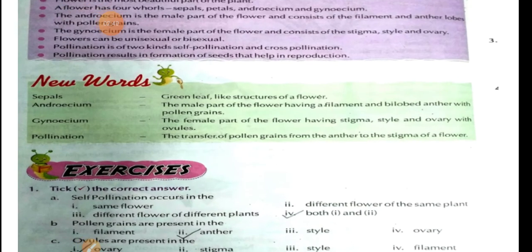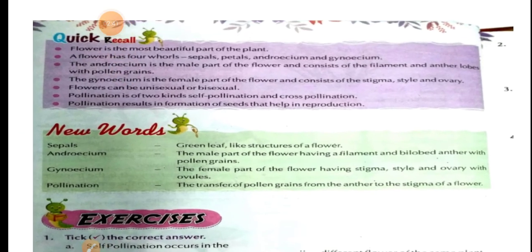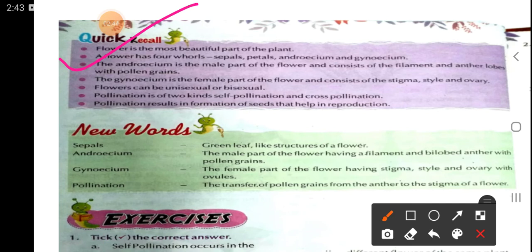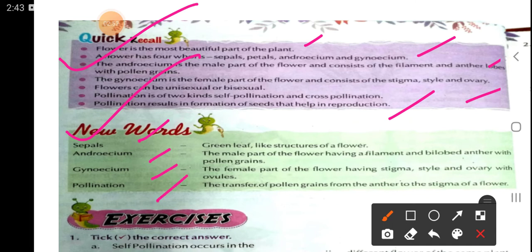Here is a quick recall. Many points are already written here from previous discussions. You will read them carefully one by one — sepal, androecium, gynoecium, and pollination — which I had discussed previously.